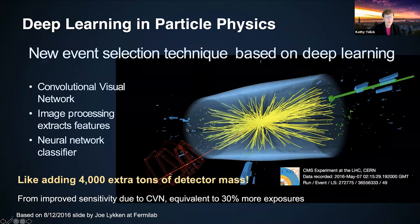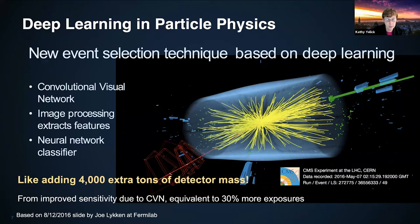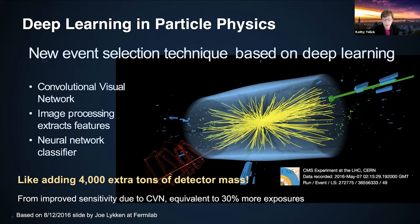Looking at a particle physics example: this is a nice highlight of the value of machine learning in science, translated into the cost of the experiments. This was work at the CMS experiment at the Large Hadron Collider. When they started using convolutional neural nets and a neural net-based classifier on the particle data — looking at these images — it was like adding 4,000 extra tons of detector mass. An incredibly powerful technique for analyzing these very large data sets.